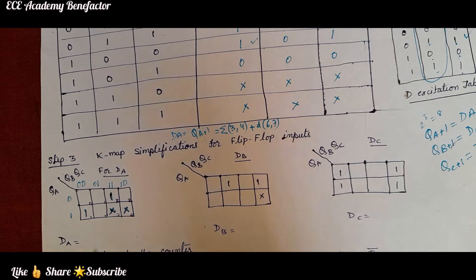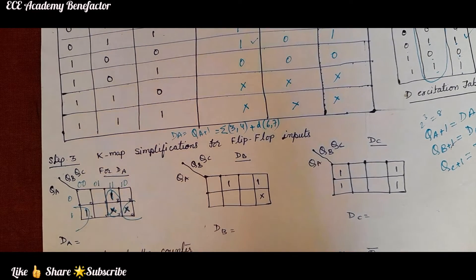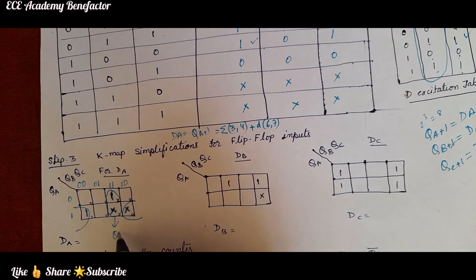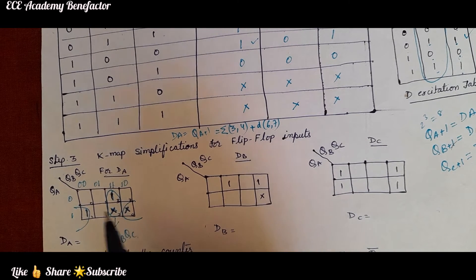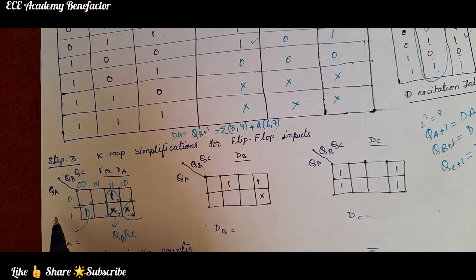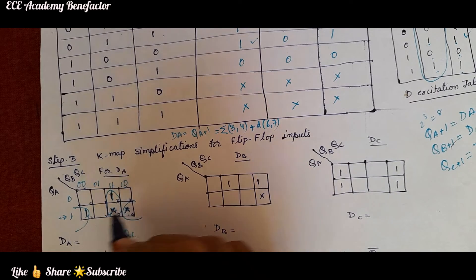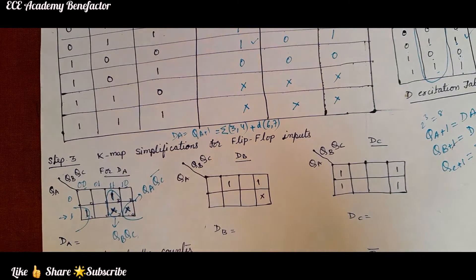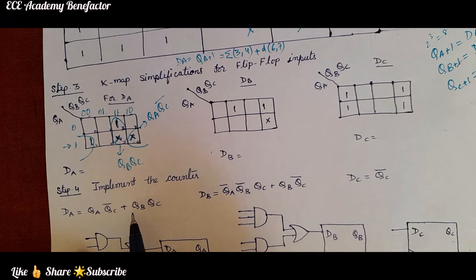Now we do the grouping of cells in the K-map for DA. One grouping gives the term QB·QC (where QB and QC are both 1). Another grouping covers QA with QC being 0, giving the term QA·QC̄. So we get the equation for DA as: DA = QA·QC̄ + QB·QC.